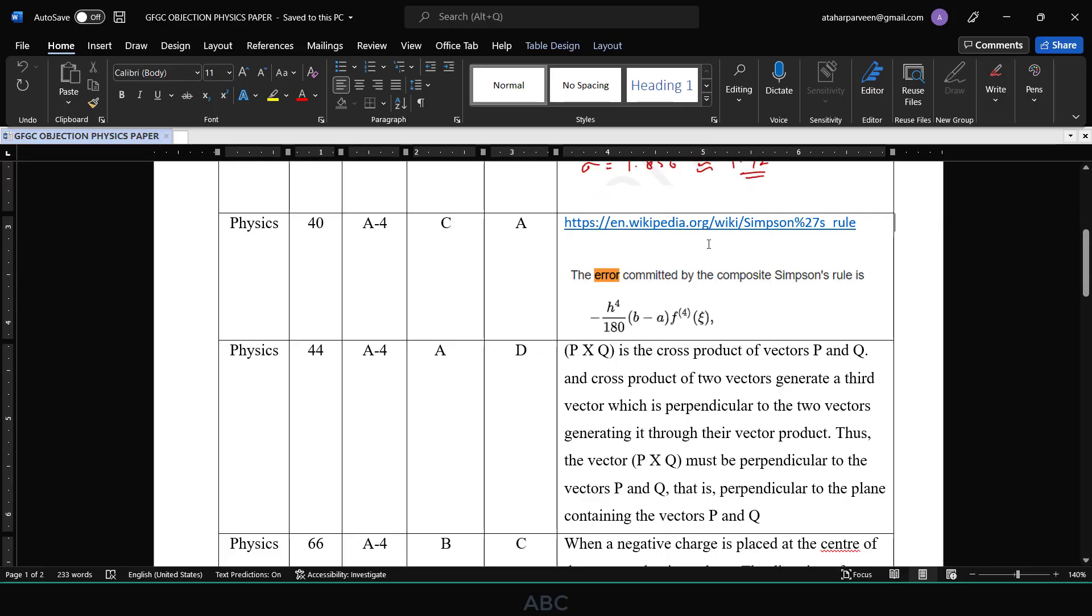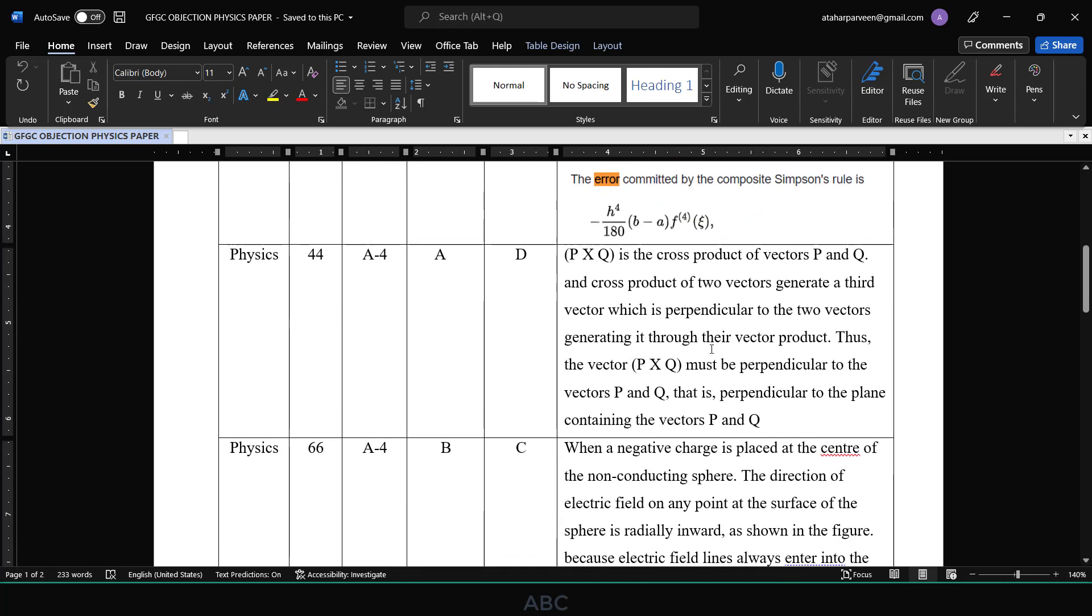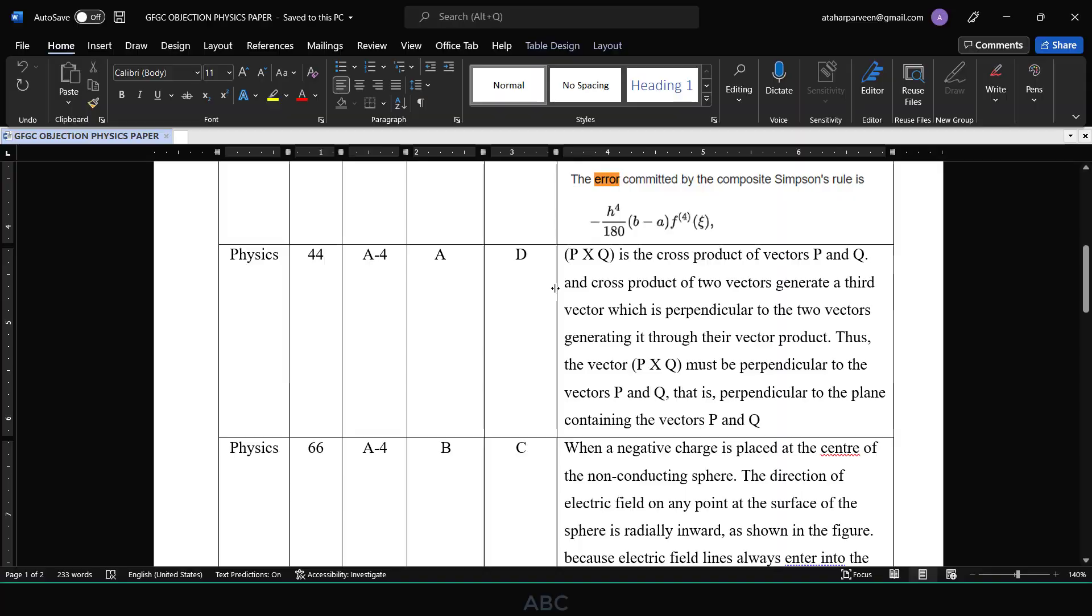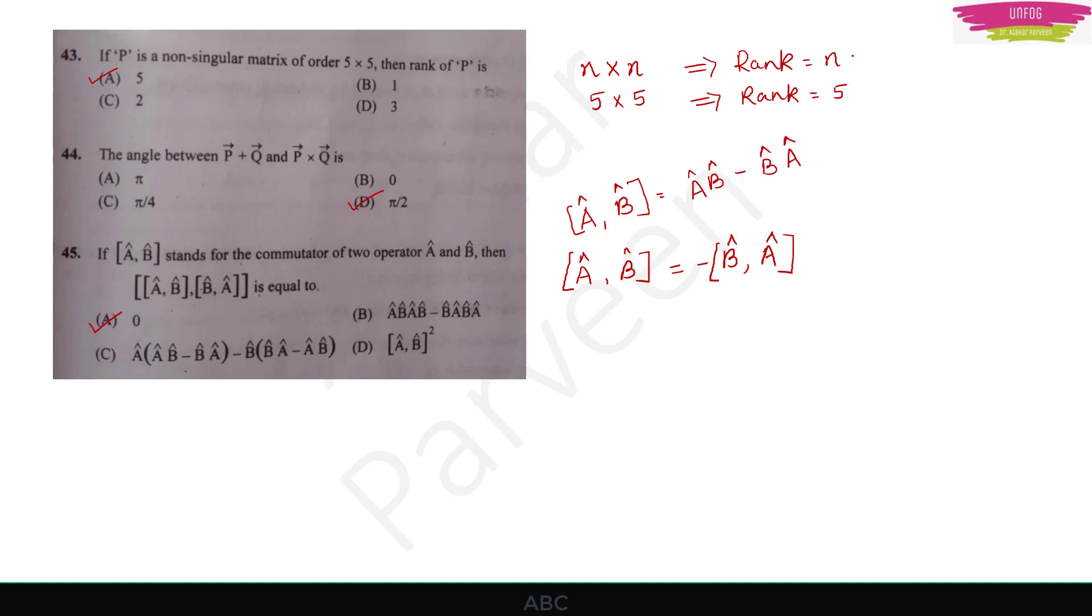The next question is question number 44. It was relating to the vectors p cross q and p plus q, what is the angle between them. p cross q is the cross product of vectors p and q. Cross product of two vectors generates a third vector which is perpendicular to the two vectors generating it through their vector product. Thus this vector p cross q must be perpendicular to vectors p and q, that is perpendicular to the plane containing the vectors p and q. Therefore option D should be the right answer whereas they have given option A in the provisional key.